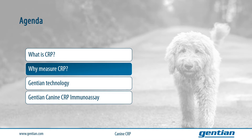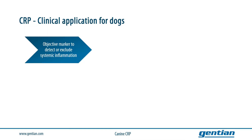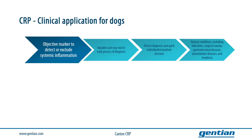Let us next look at the characteristics of CRP as a biomarker for systemic inflammation. One of the most important characteristics of CRP is that it is an objective marker for systemic inflammations with a large diagnostic window, making CRP a very valuable and easy tool in the early diagnosis process to detect or exclude systemic inflammation.